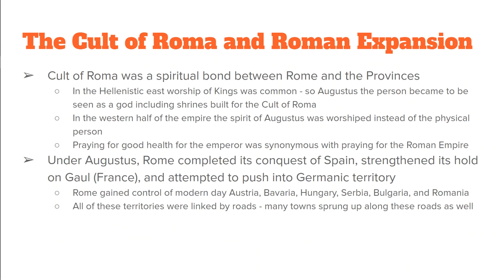Now one of the really weird things that kind of grows around Augustus is this idea of the cult of Roma. It's this semi-religion, quasi-religion — it's really weird — but it's going to create this spiritual bond that keeps Rome and the provinces together. When you look at the Hellenistic East, Greece and those areas, they have a history of worshiping kings, so this isn't that out of place. In the eastern part of the empire, they're going to worship Augustus the person like a god — shrines are going to be built for him. In the western half of the empire, it's the spirit of Augustus that's worshipped as a god, not the physical person. Either way, you're worshipping the emperor. So it came to be that when a Roman prayed for the good health of the emperor, they were actually praying for the Roman Empire, and it's the cult of Roma that's going to keep Rome together for quite a while.